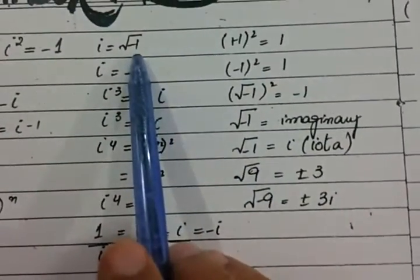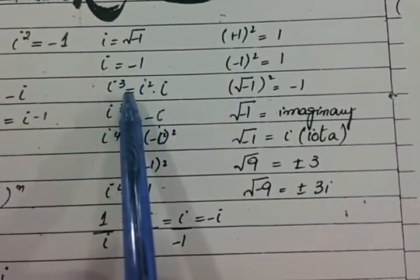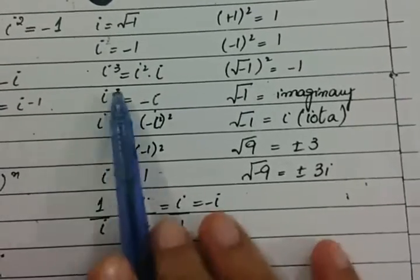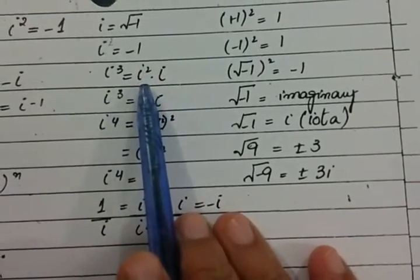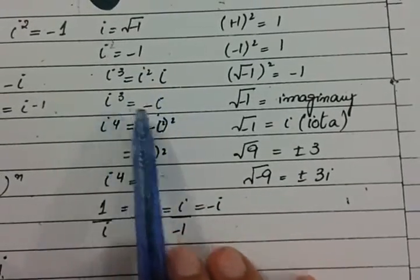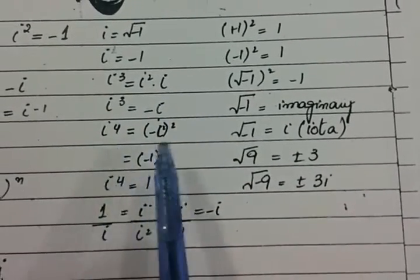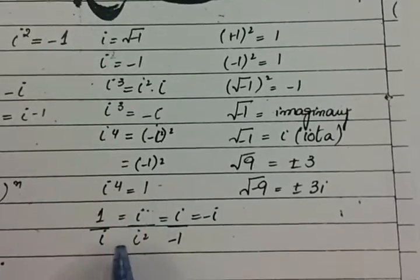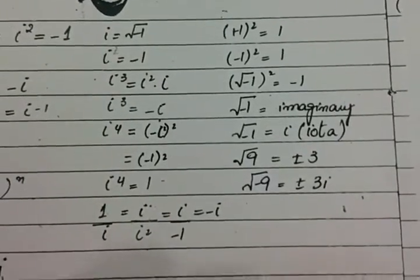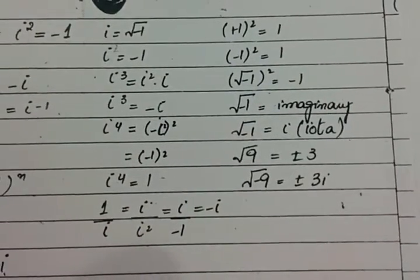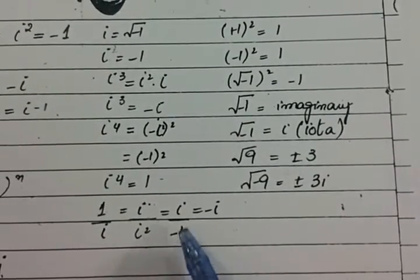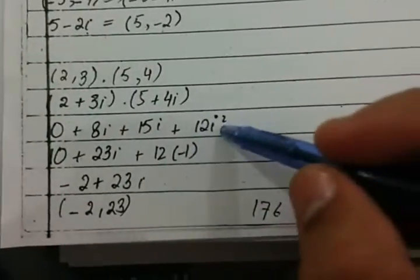We need to remember that iota equals under root of minus 1. Iota squared equals minus 1. Iota cubed is broken into iota squared times iota, and since iota squared is minus 1, iota cubed equals minus iota. Iota to the power 4 is the square of iota squared, which is the square of minus 1, that is 1. And 1 upon iota, multiplying and dividing by iota, gives iota upon iota squared, which is iota upon minus 1, that is minus iota. So remember: iota squared equals minus 1.